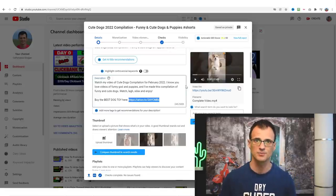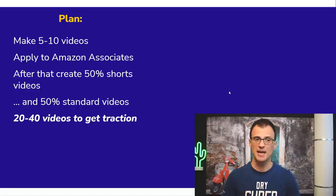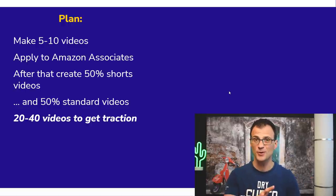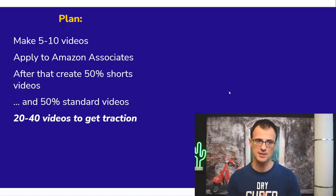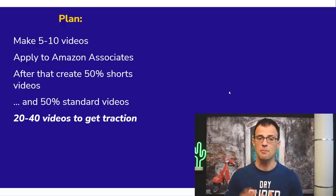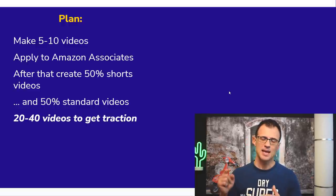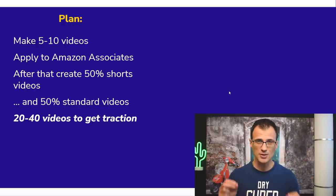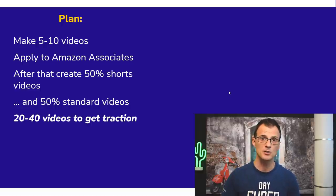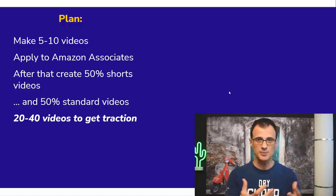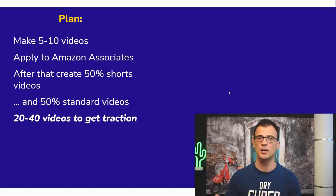To make this model work, here is the suggested plan. First, make five to ten videos using InVideo — this gives you really good knowledge of how to operate the whole system. After you've got five to ten videos, go ahead and apply to Amazon Associates; they will most likely approve you because you'll have an established channel with some views. After that, start creating about 50% Shorts videos and 50% standard videos. Your Shorts videos won't make a huge amount of ad money but they can give you a lot of subscribers fairly quickly and they're very quick to make.